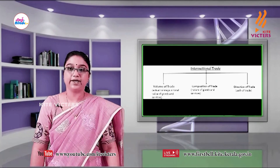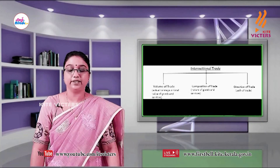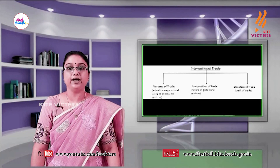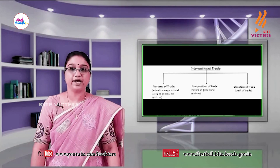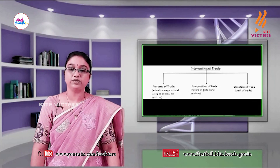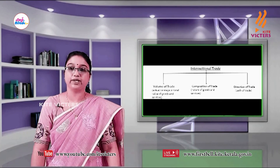There are three aspects of India's international trade: namely, volume of trade, composition of trade, and direction of trade. The volume of trade is the actual tonnage or total value of goods and services, while the composition of trade is the nature of goods and services, and the direction of trade is the path of trade.